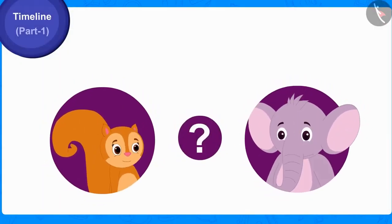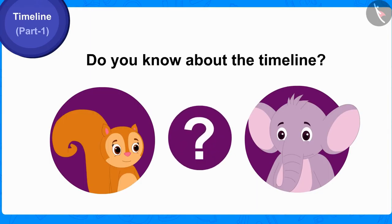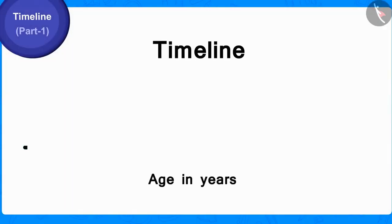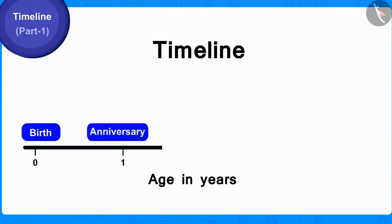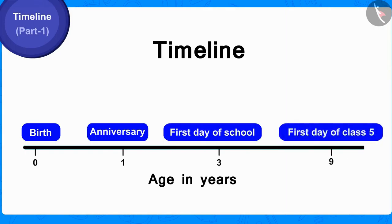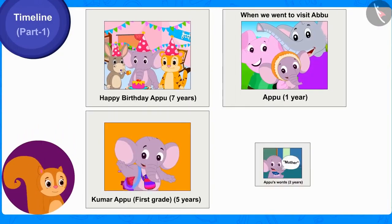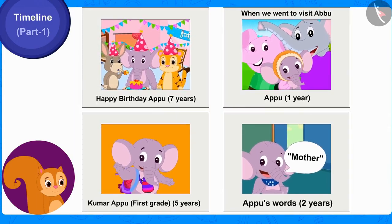Children, do you know about the timeline? That's all right. A timeline is a line on which we can depict the events that have happened in the life of any person in order of chronology. Chanda removed four photos from Appu's album.